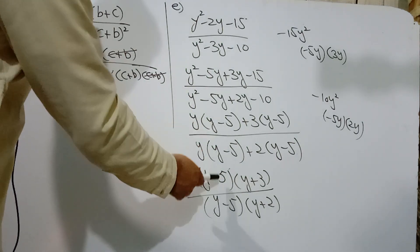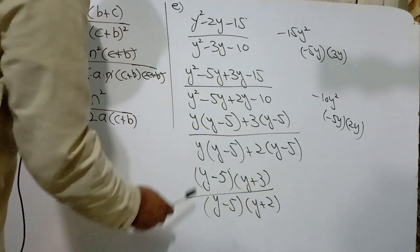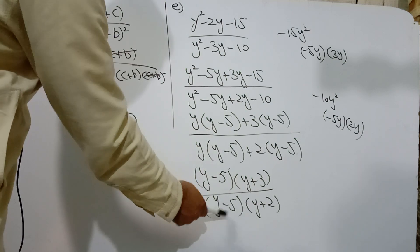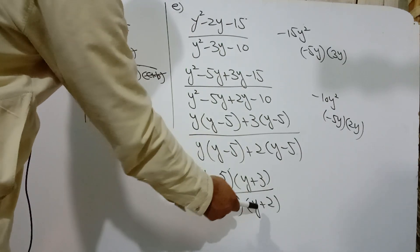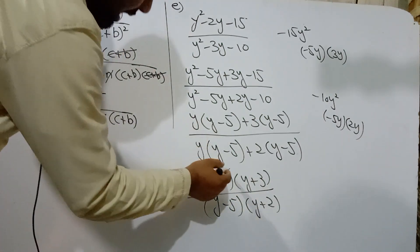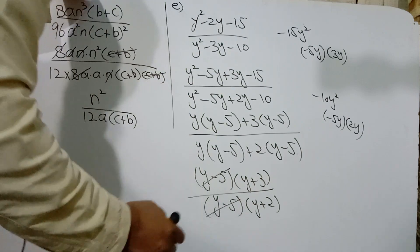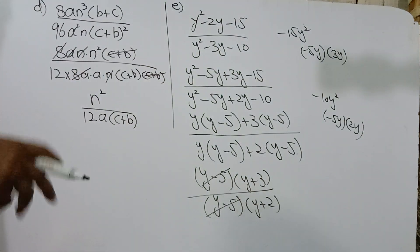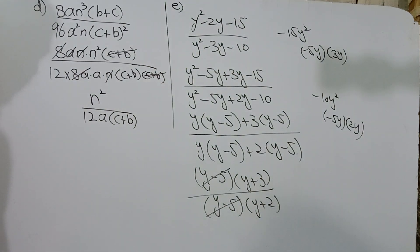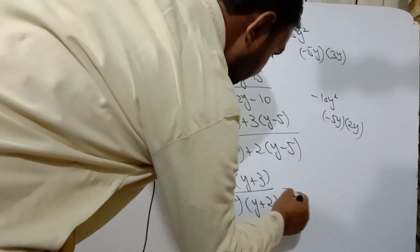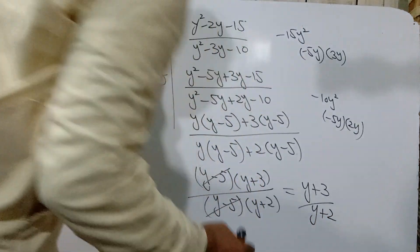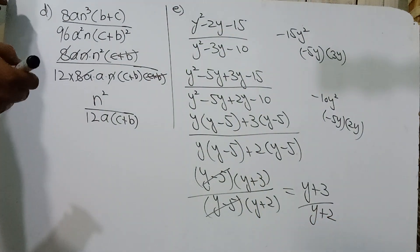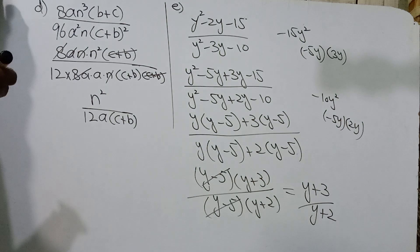y-5 one side, y+3 take up one side. Similarly y-5 one side and y+2, this y+2 take up one side. Both are cut. Same denominator. Then remaining is equal to (y+3)/(y+2). Part complete. Thank you.